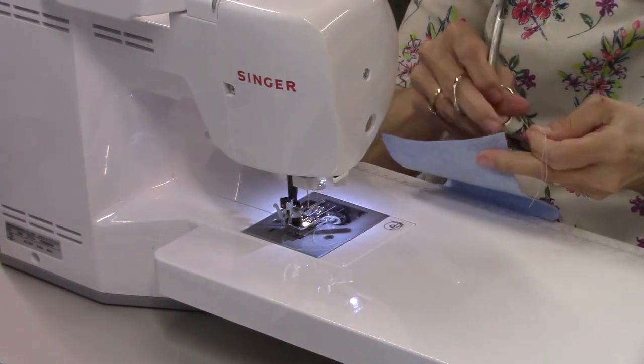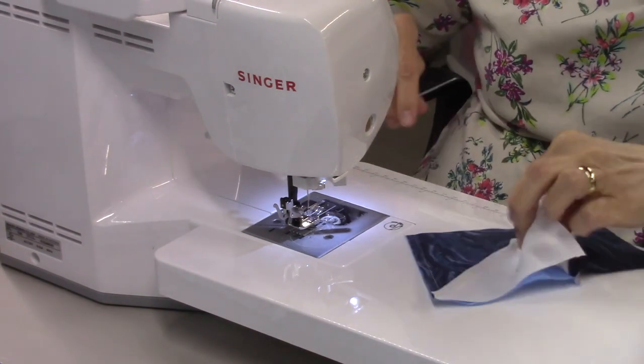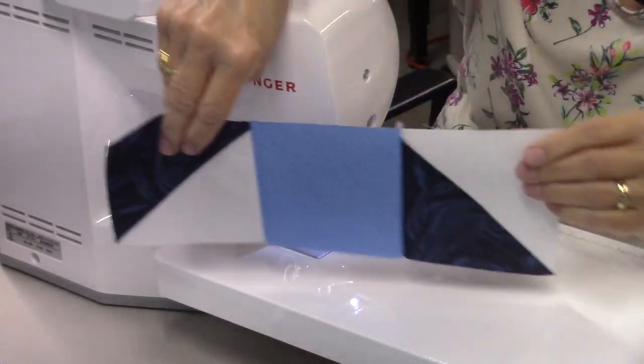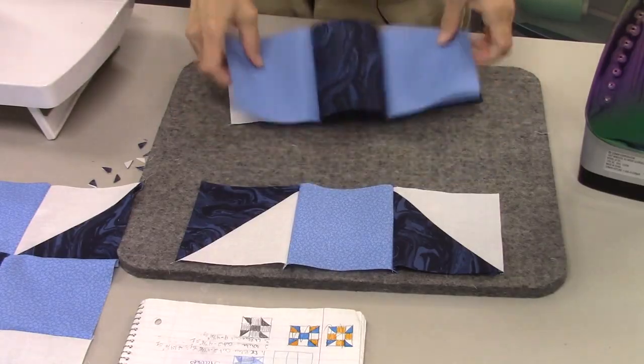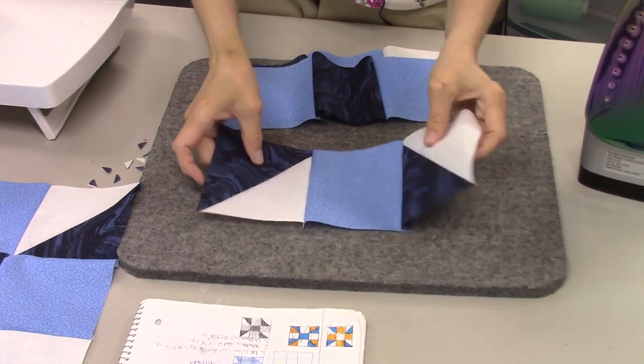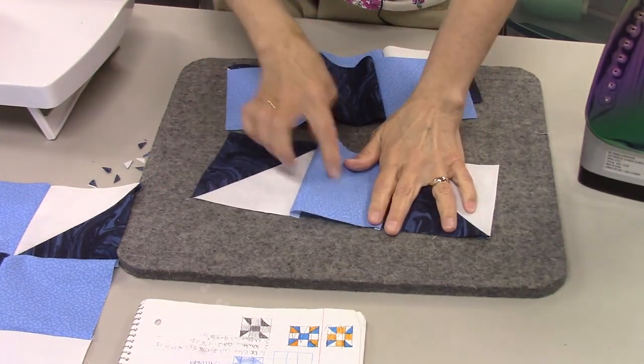Now we're going to press the seams open. Here is row number three. I'm going to start with the top row here and I'm going to press everything towards the plain squares, so it will be away from the half square triangles.